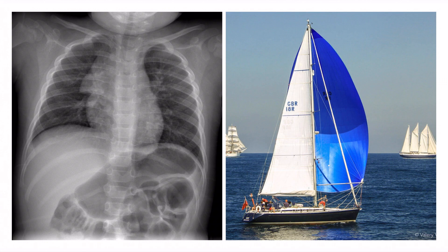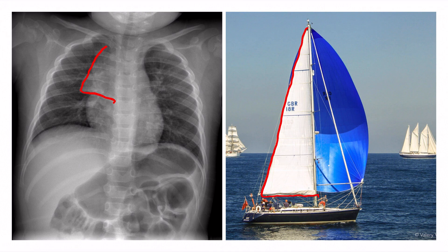This is a chest X-ray of an infant with a normal thymus. On the right side of the picture there is a boat, and the thymus looks like the sail of that boat. The thymic sail sign refers to the triangular-shaped inferior margin of a normal thymus seen on chest X-ray. This sail sign is proof that the child has a normal, developing thymus.